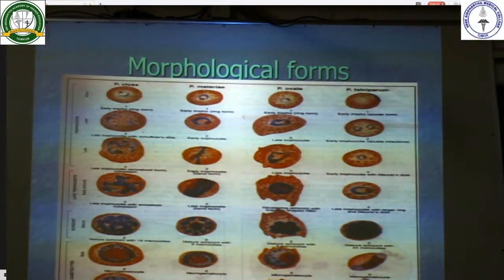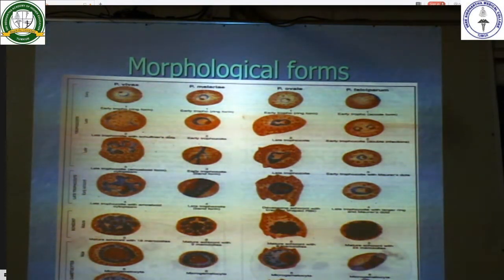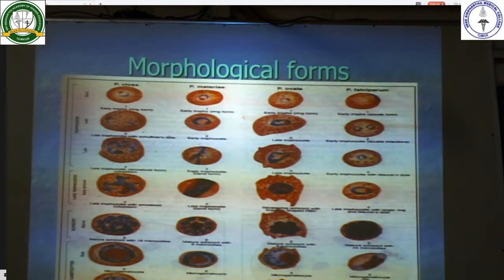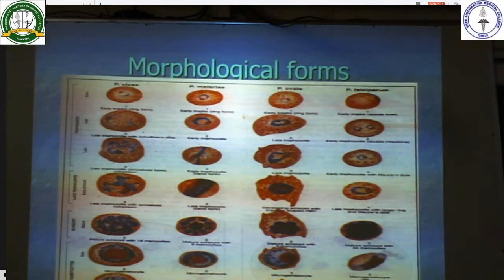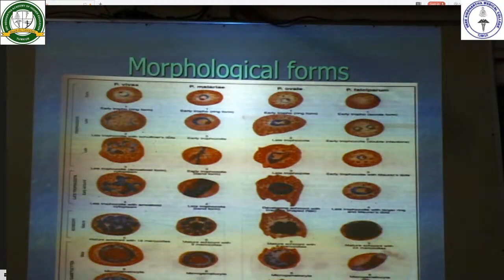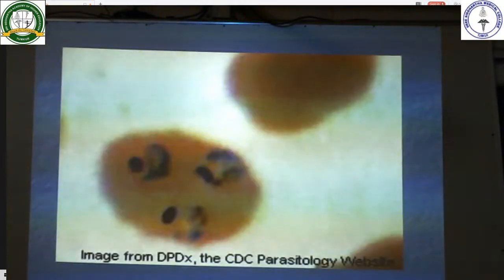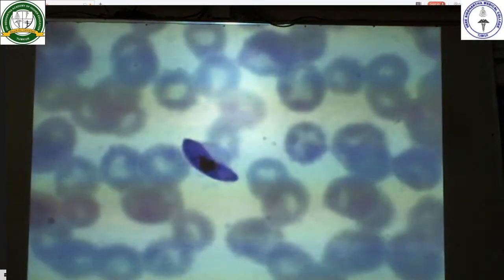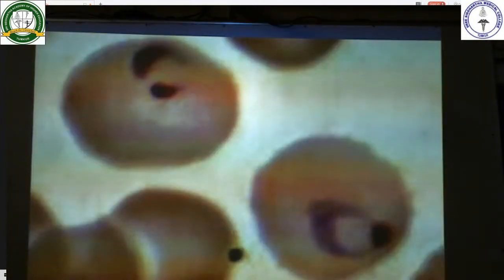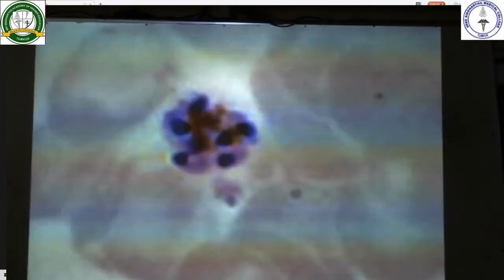These are the morphological forms. This is Plasmodium vivax, this is Plasmodium malariae, Plasmodium ovale, and Plasmodium falciparum. The early trophozoites are seen in the form of a ring — these are called ring forms. These are the gametocytes, this is the schizont stage, and this is the late trophozoite stage. These are ring forms within the RBCs, this is the gametocyte within the RBCs, and this is the schizont stage within the RBCs.